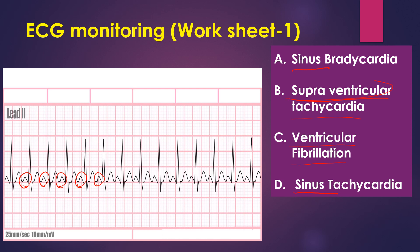If it is supraventricular tachycardia, supra means before — previous to the ventricles, which is the QRS complex. The QRS complex will overlap the P wave, so the P wave will not be fully completed; it will be overlapped. If it is ventricular fibrillation, there will be irregular waves.